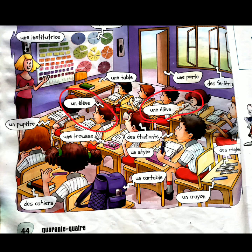A 'pupitre' — pupitre means desk. 'Un pupitre.' And 'un trousse' — trousse means pencil box.